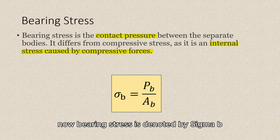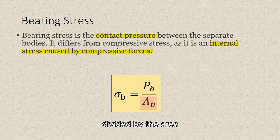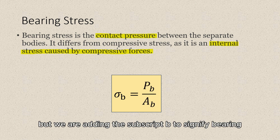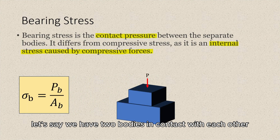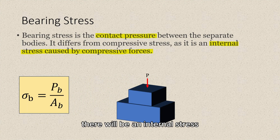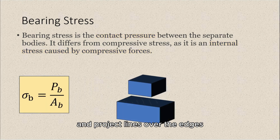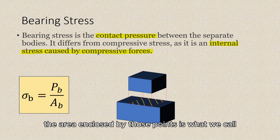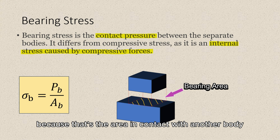Bearing stress is denoted by sigma_b, which is equal to the bearing force divided by the bearing area. This is essentially still just force divided by the area, but we are adding the subscript b to signify bearing. Now let's go to the basic definition of bearing stress. Let's say we have two bodies in contact with each other. If this top cube is placed against the bottom cube, there will be an internal stress at the junction point of these two objects. If we isolate the top cube and project lines over the edges, the area enclosed by those points is what we call the bearing area.